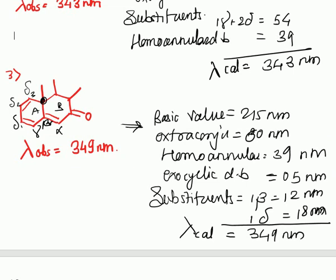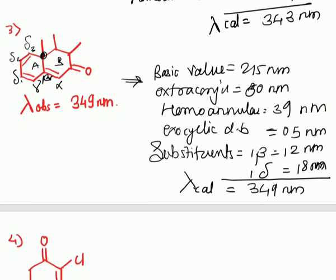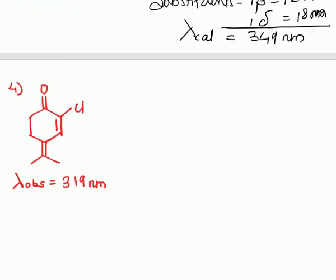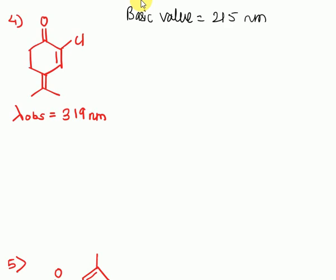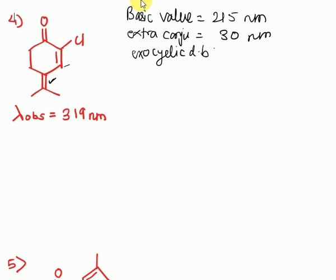The next example is also a 6-membered cyclic enone system. The basic value is 215 nanometers. There is one extra double bond, so extra conjugation contributes 30 nanometers. This double bond is exocyclic to the ring, so the exocyclic double bond contributes 5 nanometers.